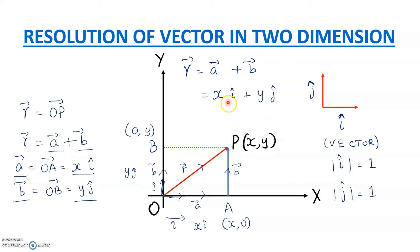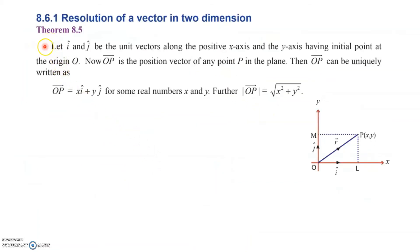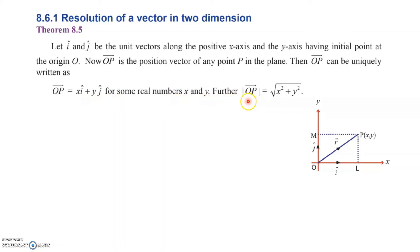Given any point, you can use this method to draw a position vector from the origin to that point and express it as x·i-cap + y·j-cap. Now let's prove Theorem 8.5, which states: let i-cap and j-cap be unit vectors along the positive x-axis and y-axis. If OP is the position vector of any point in the plane, then OP can be uniquely written as x·i + y·j for some real numbers x and y, and the magnitude of OP equals the square root of x² plus y².